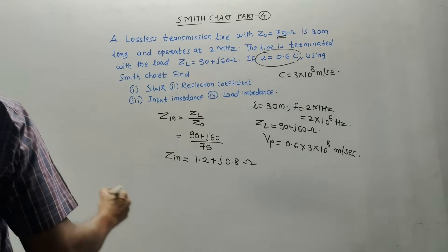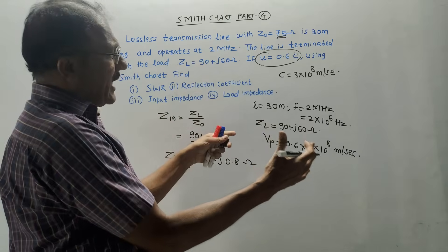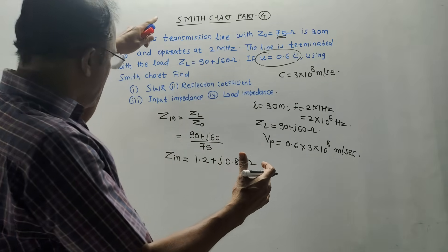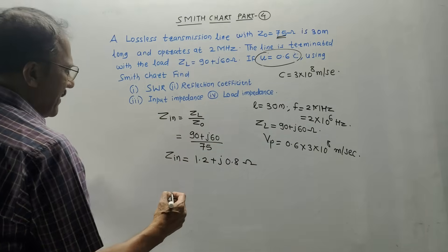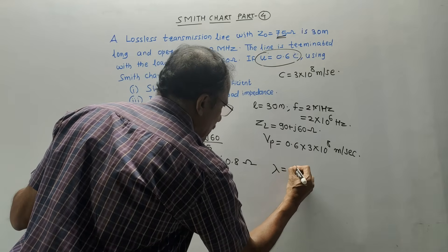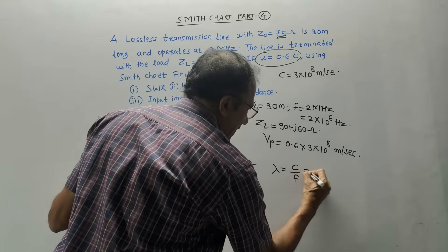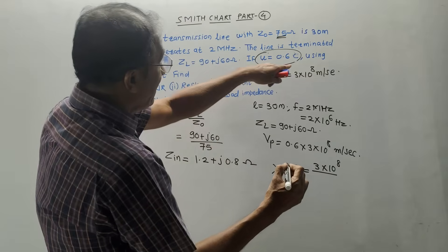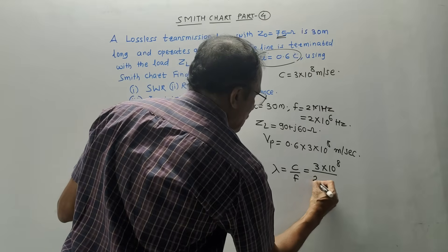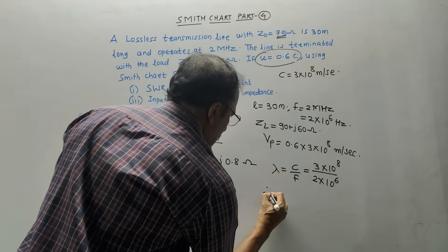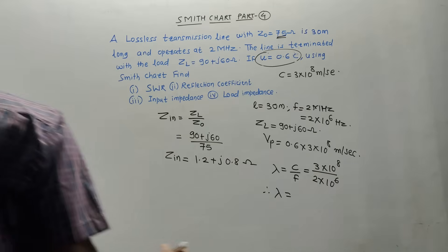Before drawing on the Smith chart, we need some additional calculations. We know the basic formula: lambda equals Vp divided by F. The value of Vp is 0.6×3×10⁸, and F is 2×10⁶ hertz. Solving on the calculator, the wavelength lambda is 90 meters.